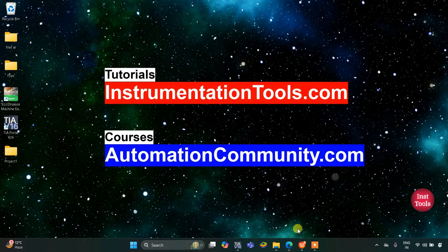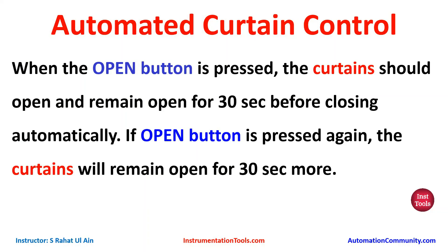Hello everyone, welcome to Automation Community. Today in this video we are going to discuss an example about automated curtain control. When the open button is pressed, the curtain should open and remain open for 30 seconds before closing automatically.